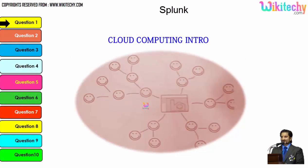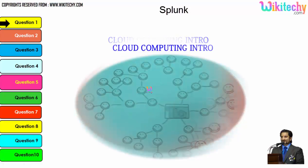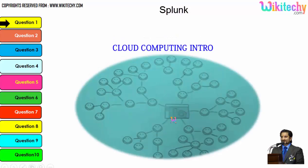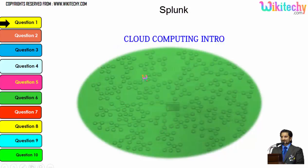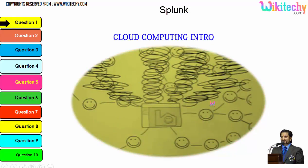Let's talk about the cloud computing intro. Here is a computer connected to a server, and this server is monitoring this computer. Once the network becomes bigger, the monitoring becomes tougher. If more computers are added, the network gets really large and the monitoring system becomes really slow. There is a possibility that the network crashes or the server couldn't monitor specific networks.